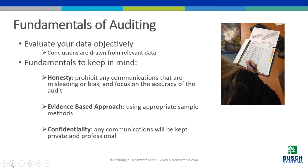It's very important that when executing your audit and getting your numbers, you evaluate data objectively so that your conclusions are relevant. In doing a waste audit, you're putting yourself out there. If you're setting waste diversion goals within your organization, you need to have integrity — otherwise you're basically participating in greenwashing. Fundamentals to keep in mind are honesty by prohibiting misleading or biased communications, using an evidence-based approach with appropriate sampling methods, and confidentiality — any reporting from the audit shouldn't be released without permission.